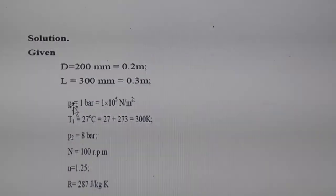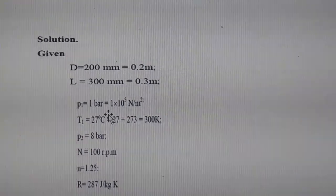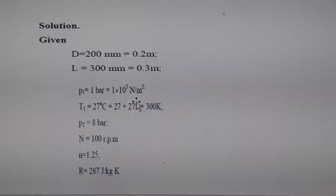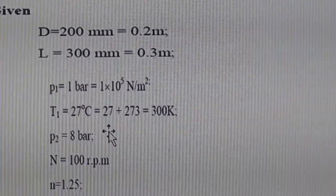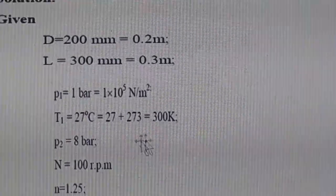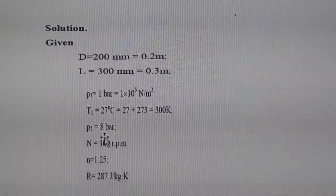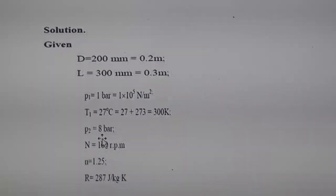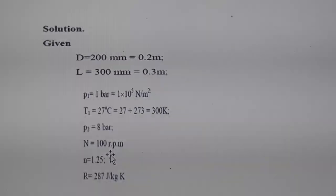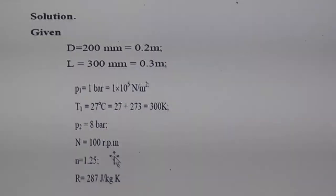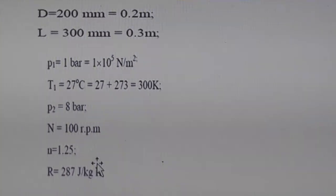Pressure p1 = 1 bar = 1×10⁵ Pa. Temperature T1 = 27°C = 27 + 273 = 300 K. Pressure p2 = 8 bar = 8×10⁵ Pa. Speed N = 100 rpm. Polytropic index n = 1.25. Characteristic gas constant R = 287 J/kg·K.